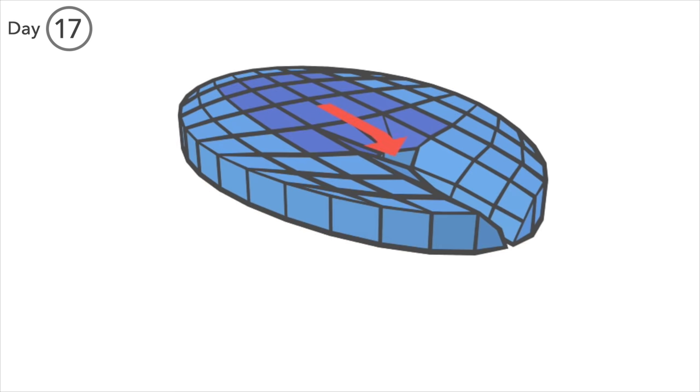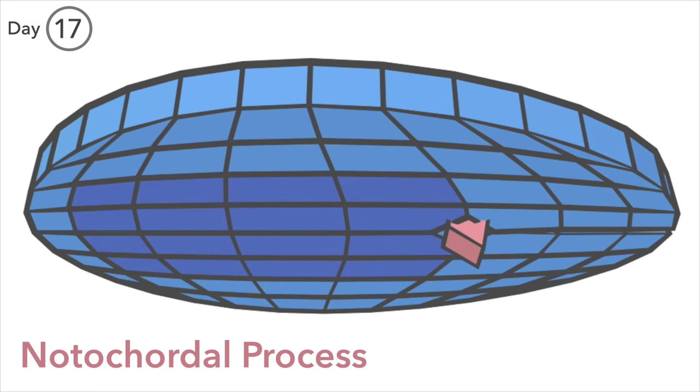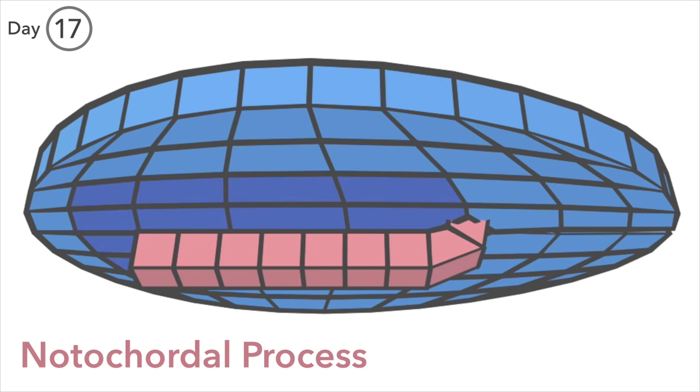Day 17. By this stage, cells burrowing down the primitive node have started to form a hollow rod called the notochordal process.